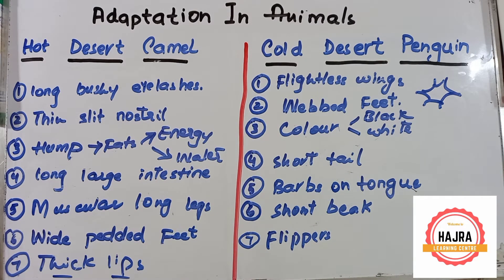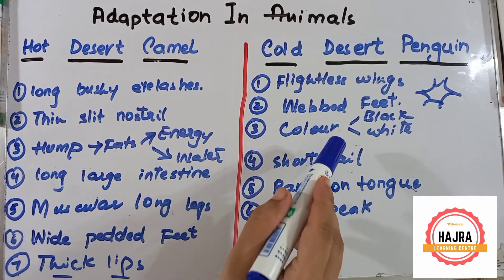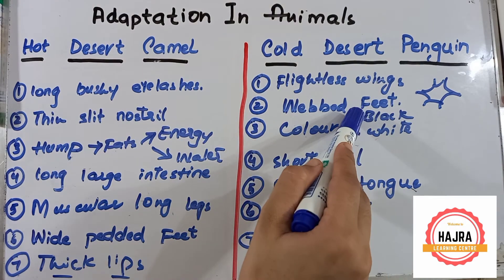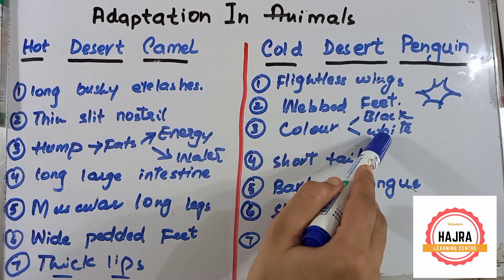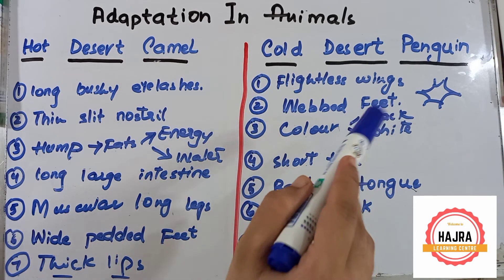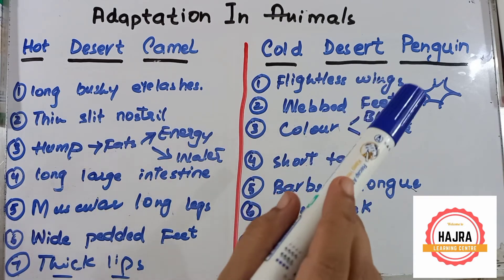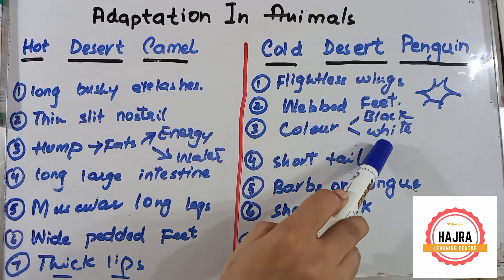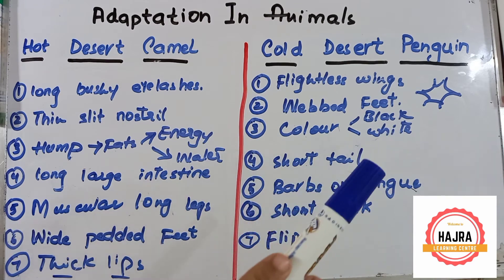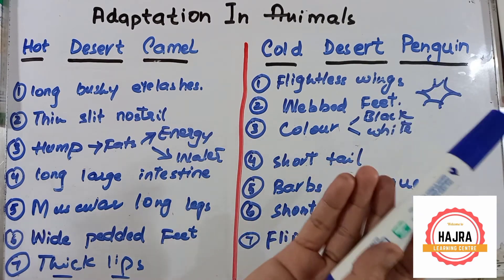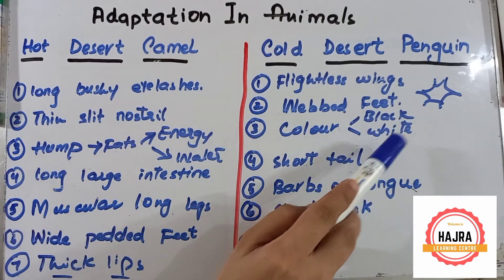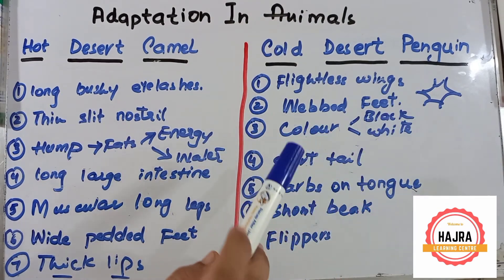Number three: penguins have two colors — black on the upper surface and white underneath. The function of the black color is to keep them warm on the cold land, and the function of the white color is to camouflage them inside the sea so other animals cannot see them easily.